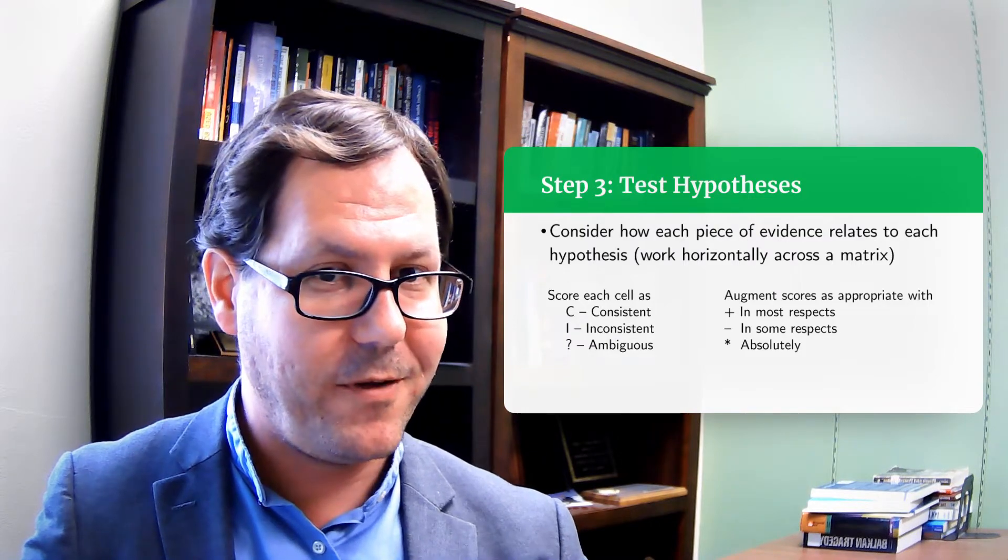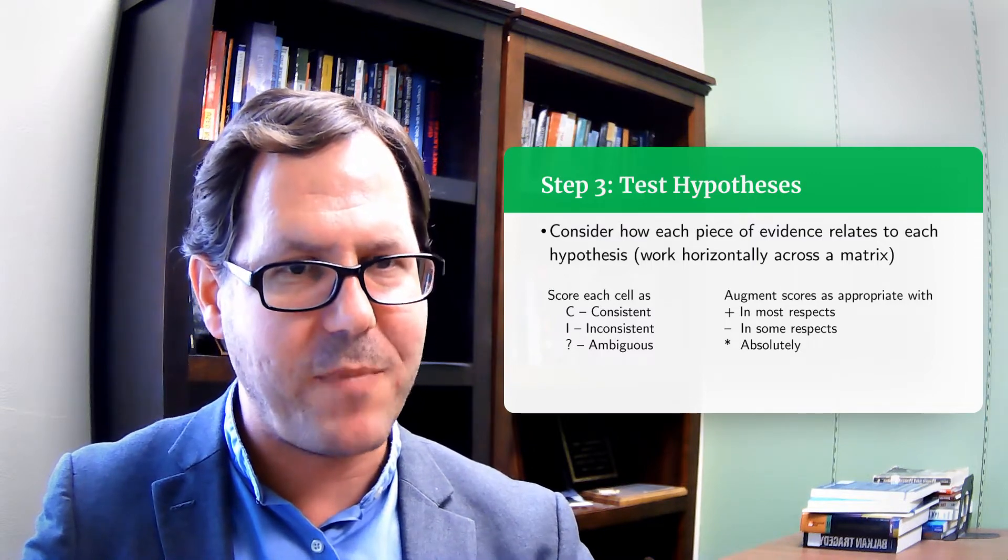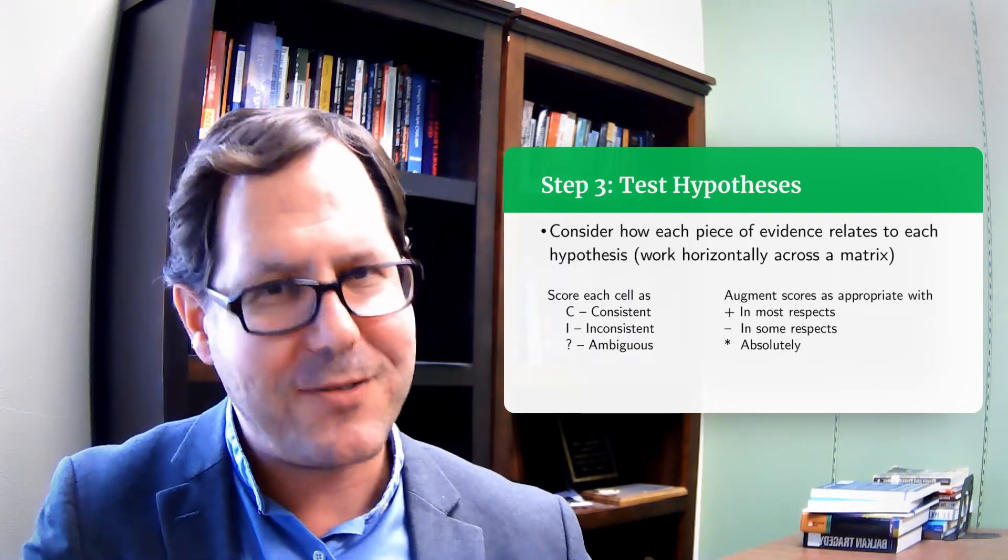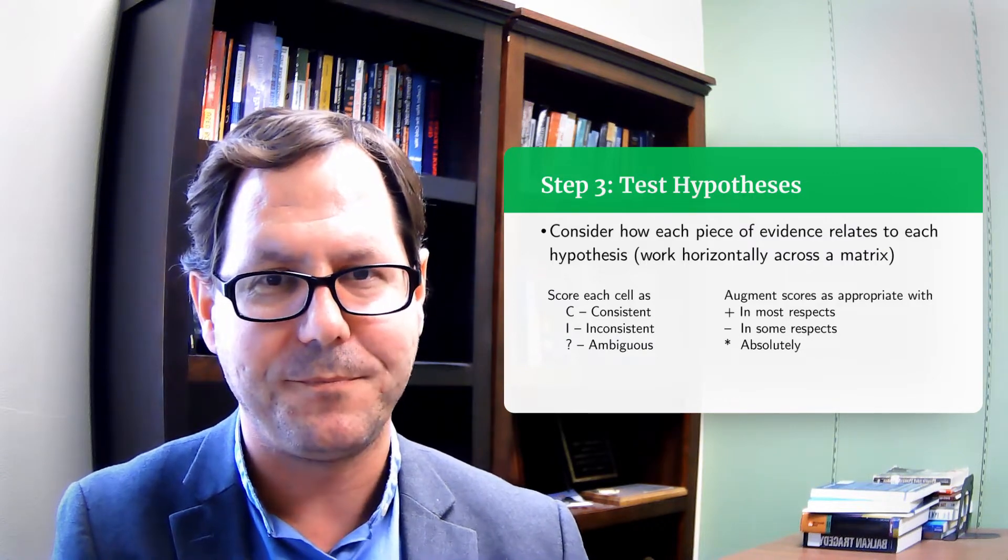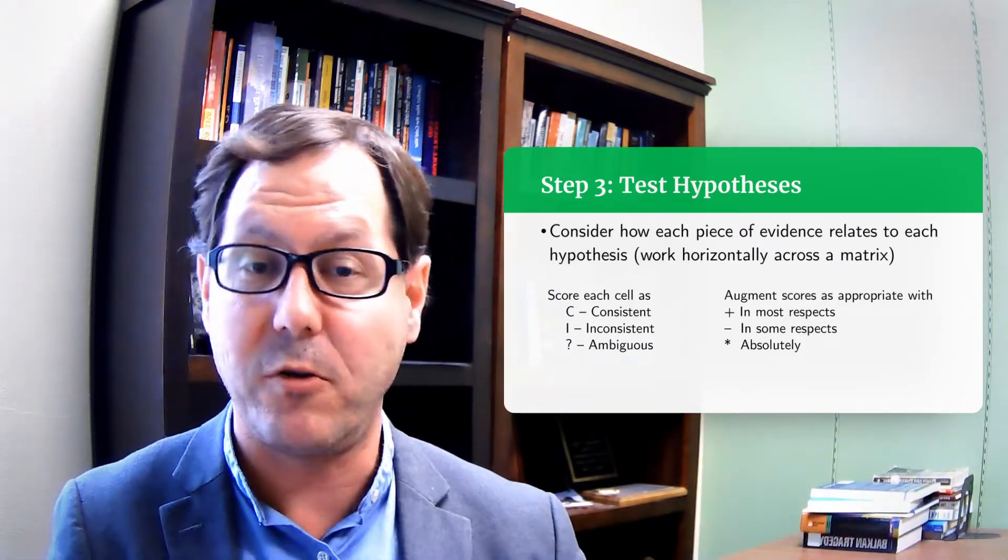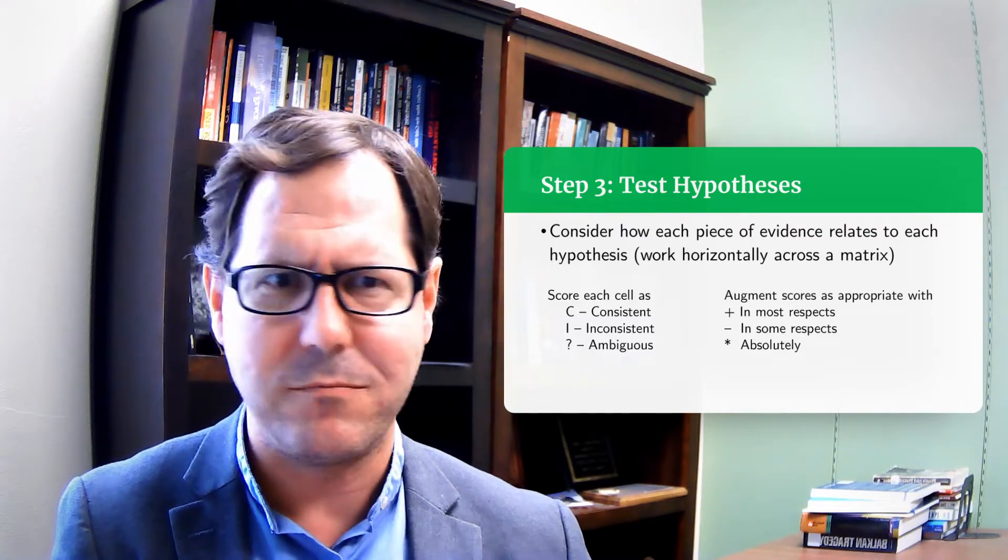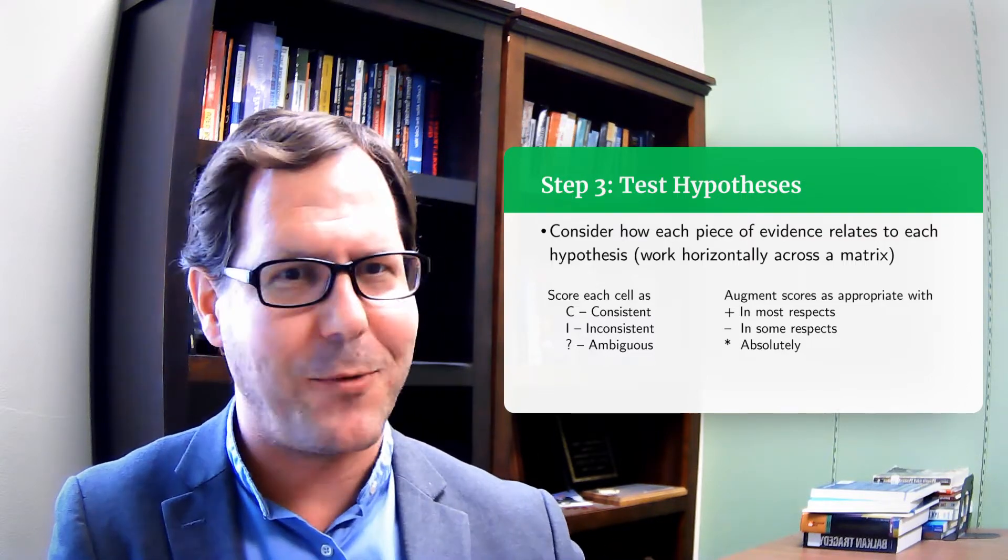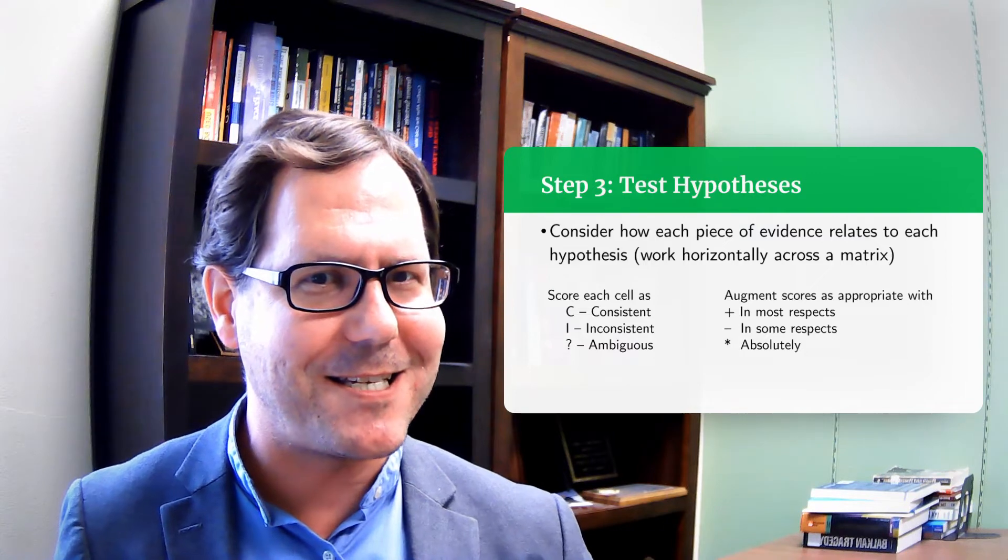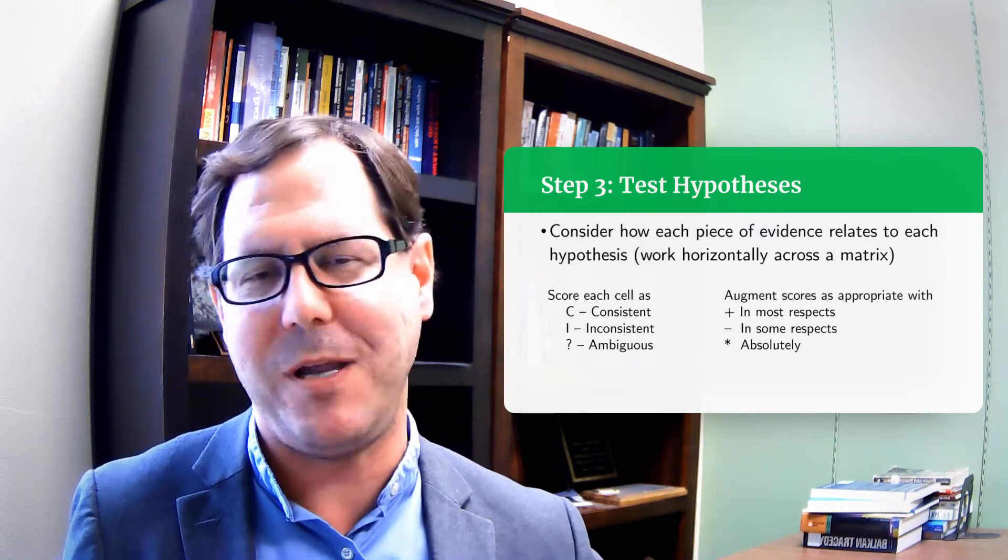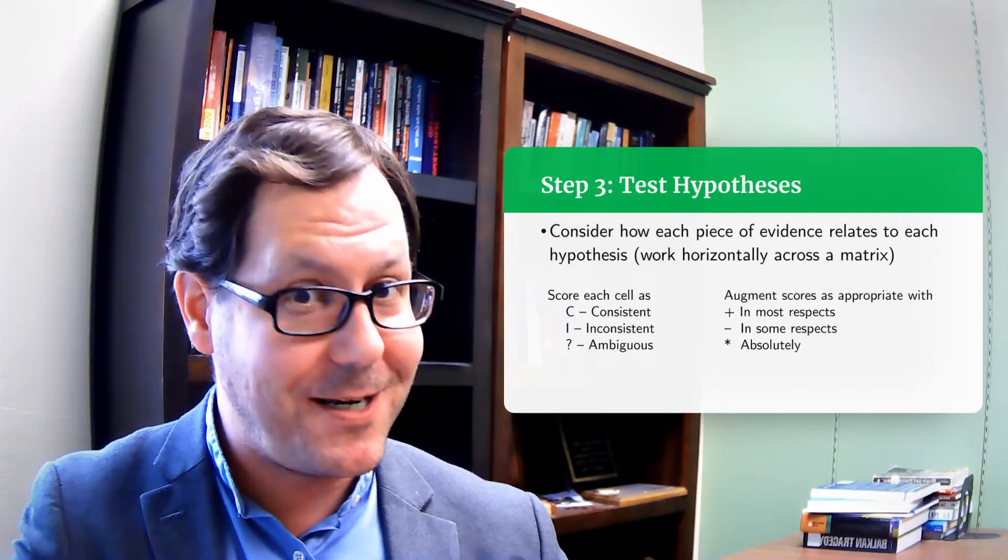Consistent does not mean supportive. Consistent just means this hypothesis can be true. I can have this piece of evidence in front of me. These things, the world can operate this way. So I always give the example of the sun rises in the east could be a piece of evidence in your matrix. It's something you've observed, it's something you've documented, it's something you've included in your matrix. And it certainly is consistent with Saddam Hussein does not have weapons of mass destruction. It's consistent with him not having them but tricking other people to thinking he does. It's consistent with him having them and deploying them. It's consistent with him having them but hiding them. The sun rising in the east is consistent with all of those in that it can be true. And we can have that hypothesis be true at the same time. So consistent isn't necessarily confirming.